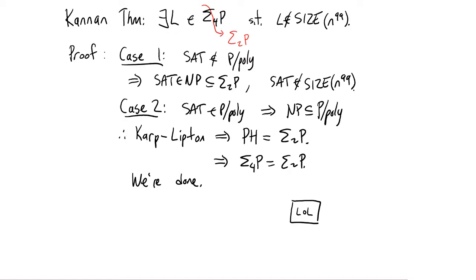Or the language that does the trick could be Kannan's language L. We're definitely sure it's not in size n to the 99. We just don't know if it's in sigma 2P. It's in sigma 4P, but we're not sure that it's in sigma 2P. But either way, one of these two cases must be true. So there must exist a language in sigma 2P without circuits of size n to the 99.